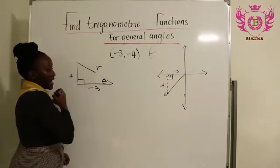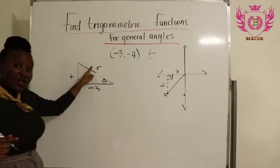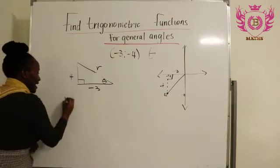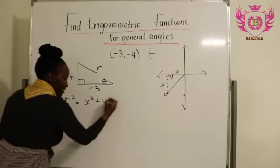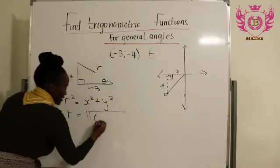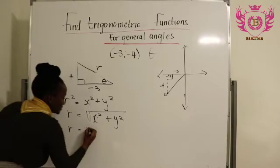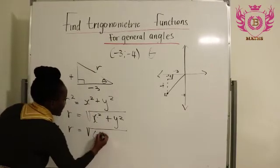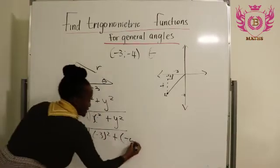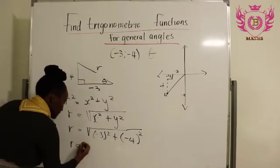So we're looking for the side r. We know that when we have a right angle triangle and we have the missing side, we can use the Pythagorean theorem to find r. So our formula is r² = x² + y². And to find r, r will equal the square root of x² + y². Now let's put our values. It will be the square root of (-3)² plus (-4)². If you calculate this your r will be 5.